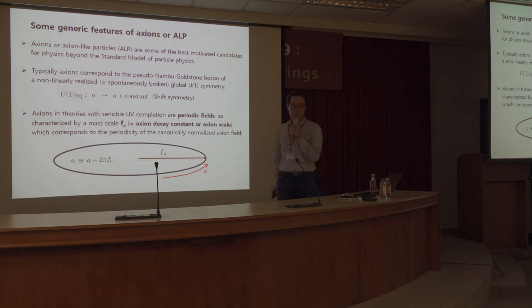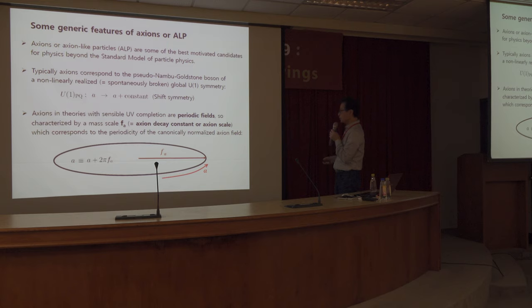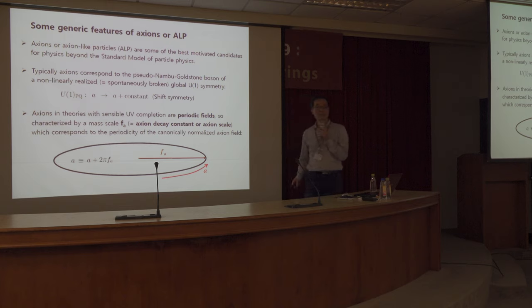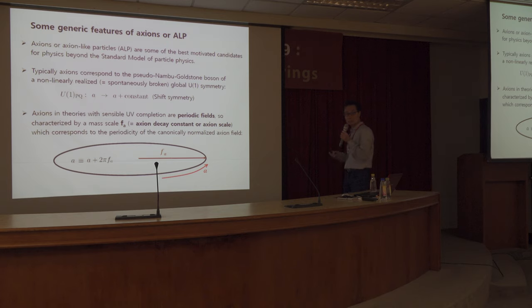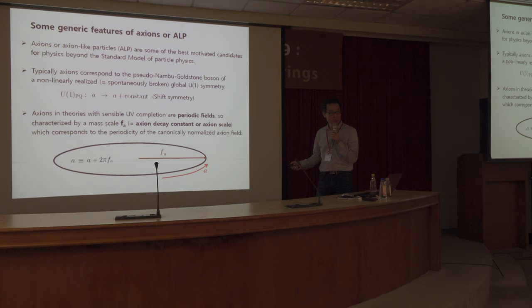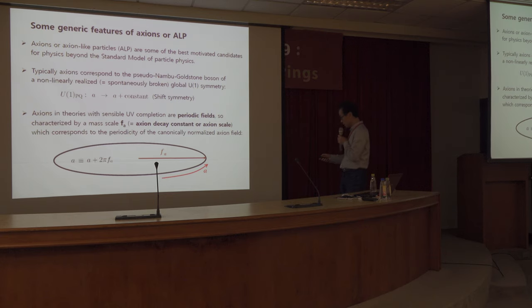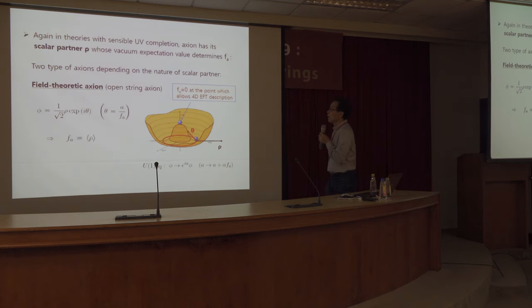At least in theories with a UV completion, axions are associated with a scalar partner. Each axion has a scale f_a, usually called the axion decay constant or simply axion scale, which defines the periodicity of the canonically normalized axion field a. So 2π f_a is the period of the canonically normalized axion field a.